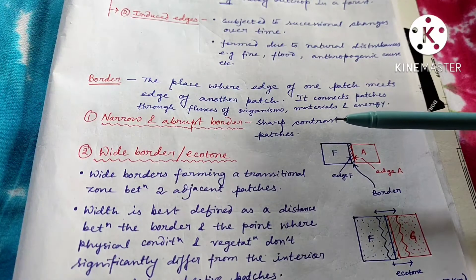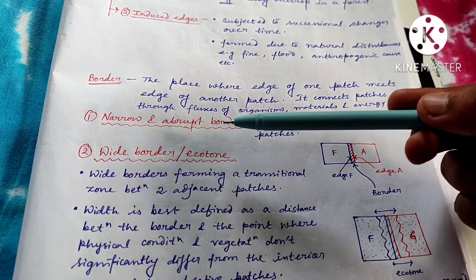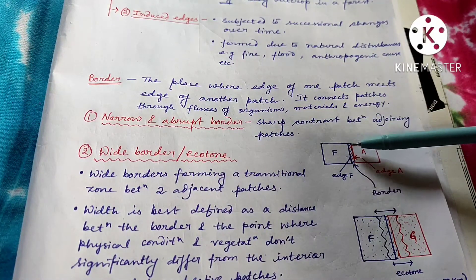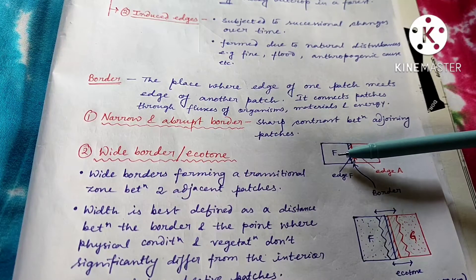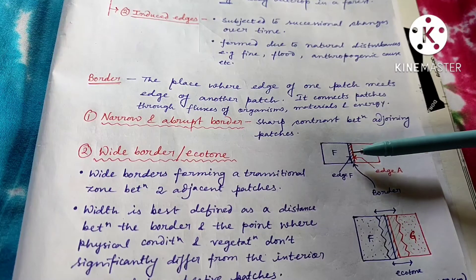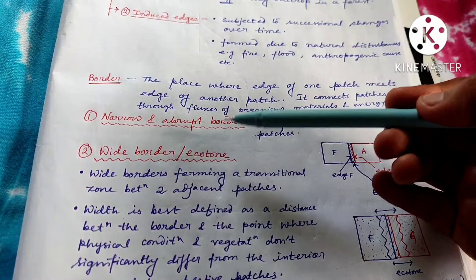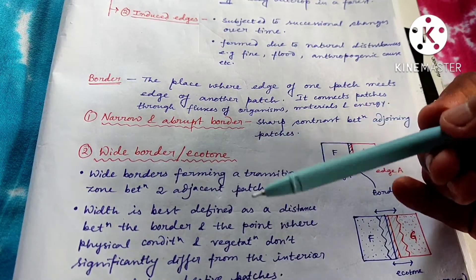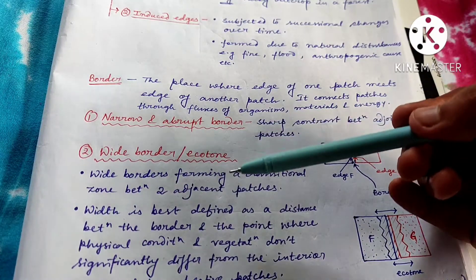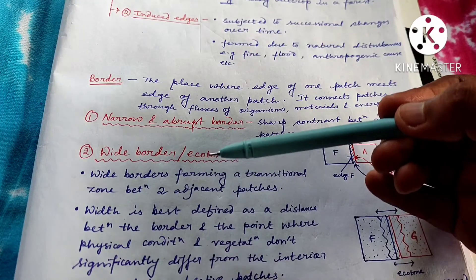There are four types of borders. The first is a narrow and abrupt border, which indicates a sharp contrast between adjacent patches — for example, a forest next to an agricultural field with a very sharp, narrow border between them. Now, coming to our main topic: ecotone. Remember, ecotone is not just any kind of border between two adjacent patches; it is a type of wide border between two adjacent patches or two adjacent communities.